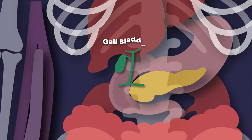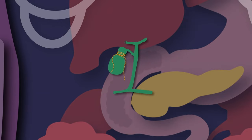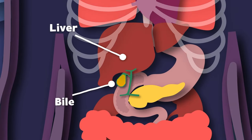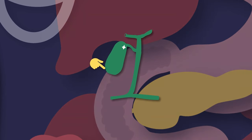I am your gallbladder. I am a sac-shaped organ, you see. I am a gallbladder. Your liver stores its bile in me. My surface is smooth to the touch. I am green in color, now you know that much.